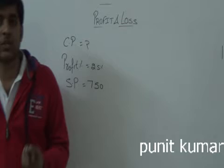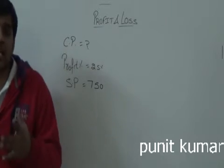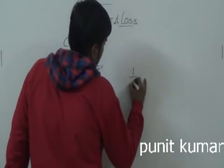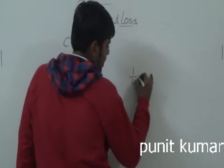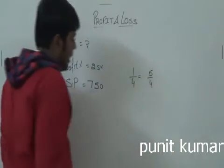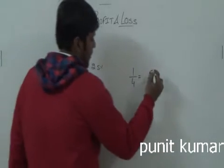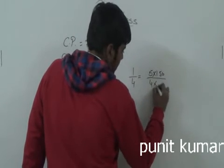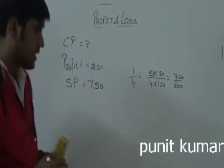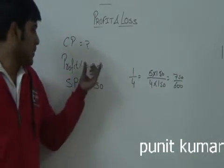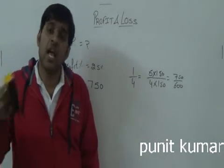The same reverse question: I am selling an item at 750 rupees and gaining a profit of 25%. Find the cost price. Since 25% is 1 by 4, SP is 5 parts and CP is 4 parts. SP ratio 5 equals 750, so CP ratio 4 automatically becomes 600 rupees. From this same concept, you will be able to solve every such question.